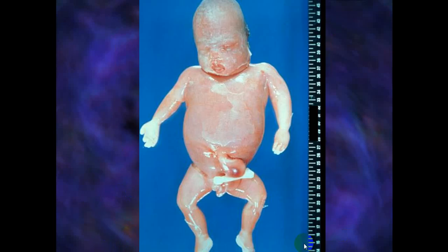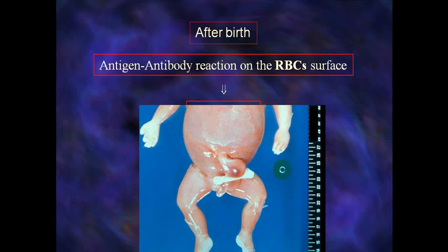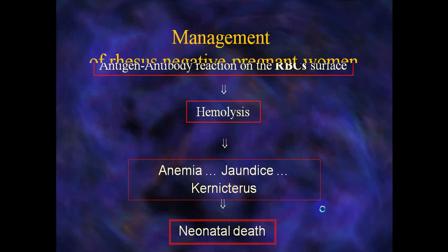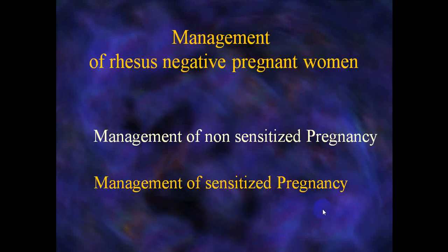The increased amount of fluid causes generalized edema of the fetus: head, abdomen, heart, ascites, and subcutaneous edema. After birth, the antigen-antibody reaction on the RBC surface causes hemolysis, anemia, jaundice, and kernicterus, potentially leading to neonatal death if jaundice and RBC destruction are severe.